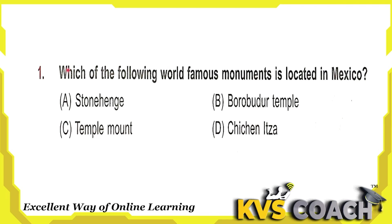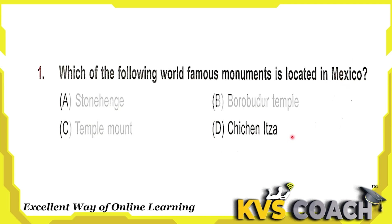First question: which of the following world famous monuments is located in Mexico? Option A is Stonehenge, located in England. Option B is Borobudur Temple, located in Indonesia. Option C is Temple Mount, located in Israel. Option D is Chichen Itza, located in Mexico. So the right answer is option D.